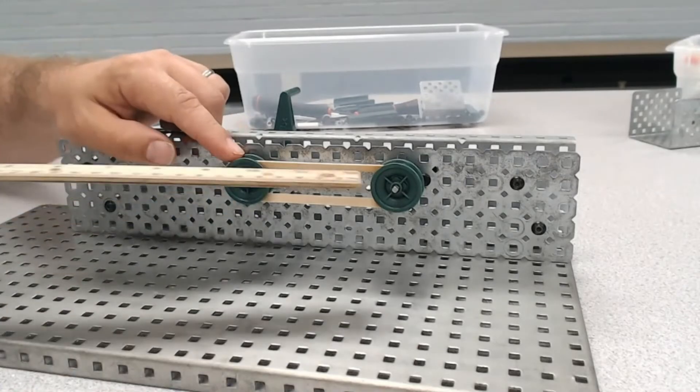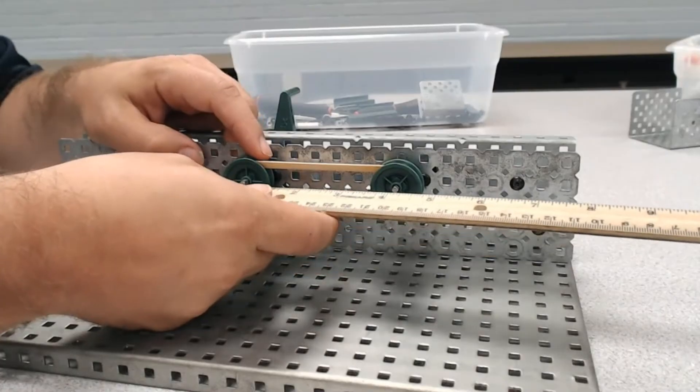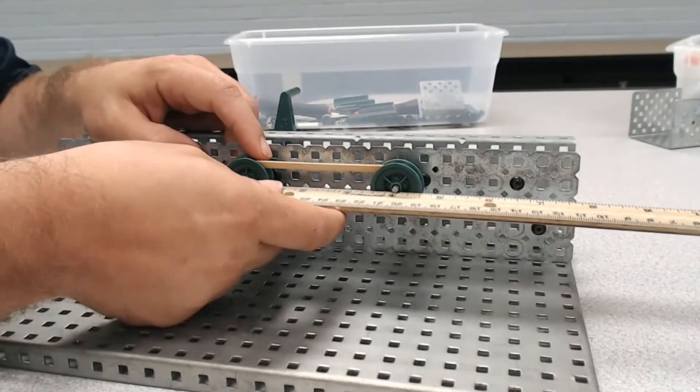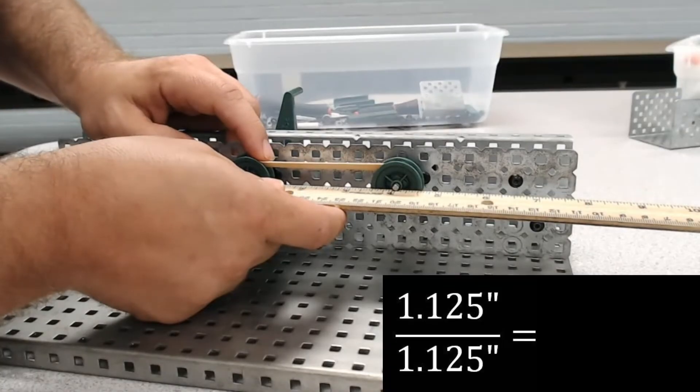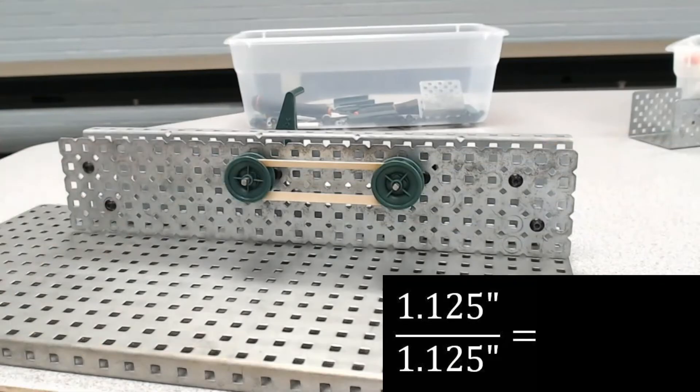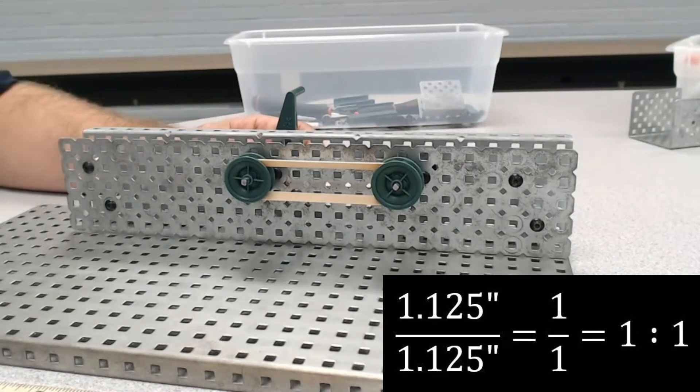You may be saying, well, they look like they're the same size gear, so they must be a one-to-one ratio. But let's go ahead and examine it for ourselves. If we look, we see the gear size is measuring out at about one and one-eighth of an inch across the diameter on both gears. So one and one-eighth divided by one and one-eighth would end up being a one-to-one gear ratio. So you are correct on that one.